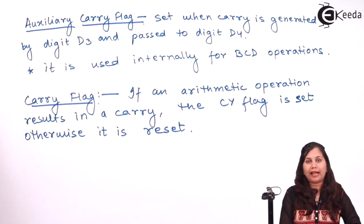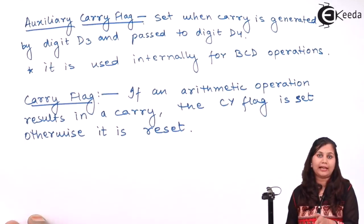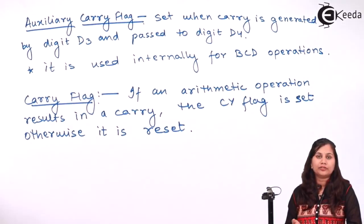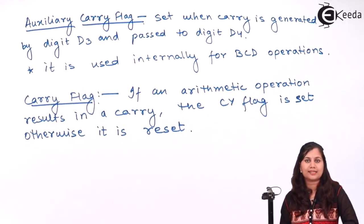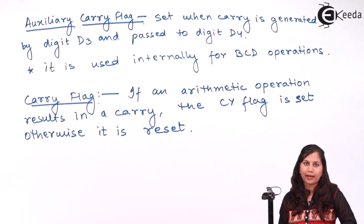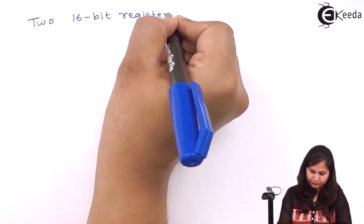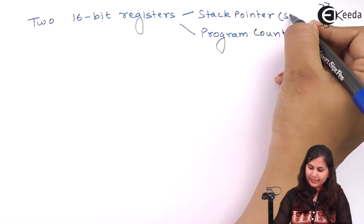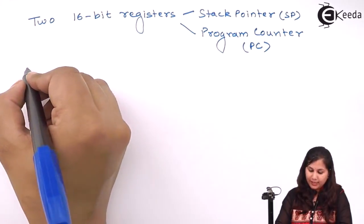So these were the five flags used in the 8085 microprocessor flag register. In addition to the accumulator, flag register, and the six registers, there are two additional 16-bit registers in the 8085: the stack pointer (SP) and the program counter (PC). Let us study what is the use of these two registers.